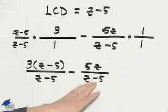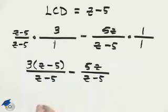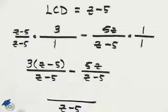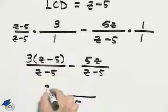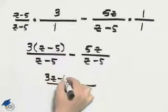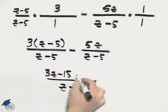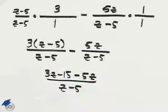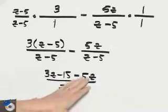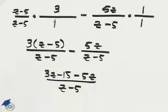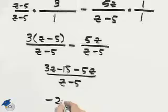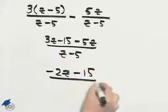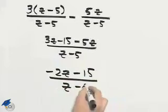Now that we have common denominators, we can actually proceed with subtracting the numerators. We will have 3z minus 15 minus 5z. We can simplify that: 3z minus 5z is negative 2z minus 15, all over z minus 5.